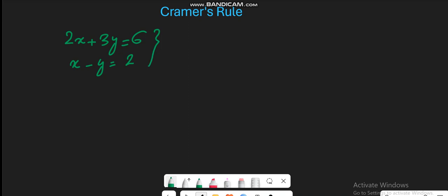So Cramer's Rule actually uses the concept of the determinant. So let's first represent this system of linear equations in terms of the matrix form, which is Ax is equal to B.